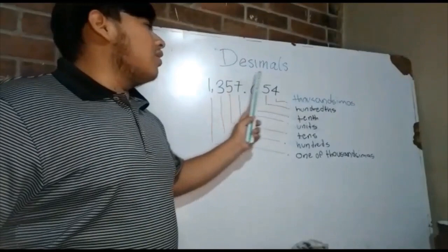Decimal numbers are those that are represented via the comma and that have an integer part to the left of the comma and another decimal part to the right of the comma.